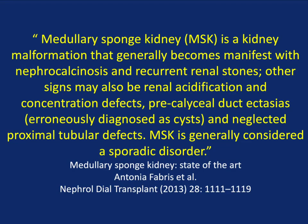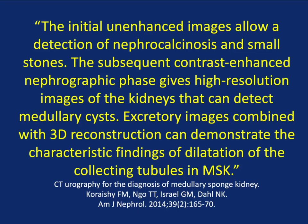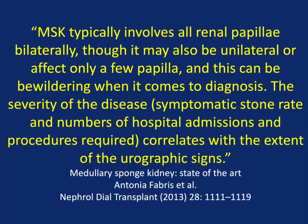In this article by Febri, medullary sponge kidney is a kidney malformation that generally becomes manifest with nephrocalcinosis and recurrent urinary stones. Other signs may be renal acidification and concentration defects, pre-calyceal ductectasia, and proximal tubular defects. It's generally considered a sporadic disorder. The initial non-contrast scans allow detection of nephrocalcinosis and small stones — a good example of why in hematuria we get non-contrast CT. The excretory phase gives a characteristic appearance, but the non-contrast can make it much easier. Medullary sponge typically involves all renal papilla bilaterally, but it can be unilateral or involve just a few papilla. Severity of disease correlates with the extent of urographic signs.